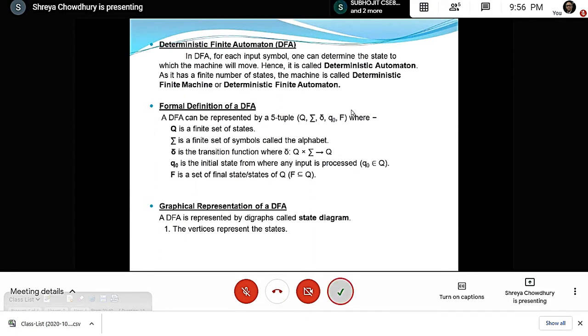The formal definition of a DFA can be represented by a five-tuple: Q, Σ, δ, q₀, and F, where Q is the finite set of states, Σ is a finite set of symbols called the alphabet, δ is the transition function where δ: Q × Σ → Q, and q₀ is the initial state.